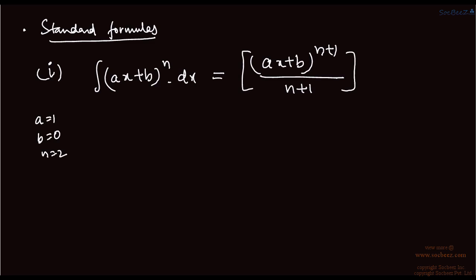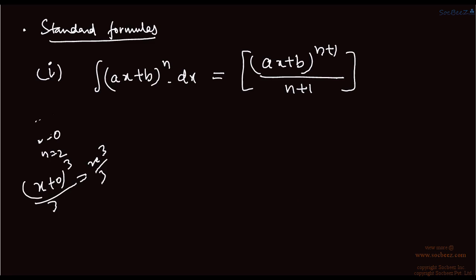So putting those values in the right-hand side, we get (x + 0) to the power 3 upon 3, which is x cubed by 3. That's why we got g(x) as x cubed by 3.